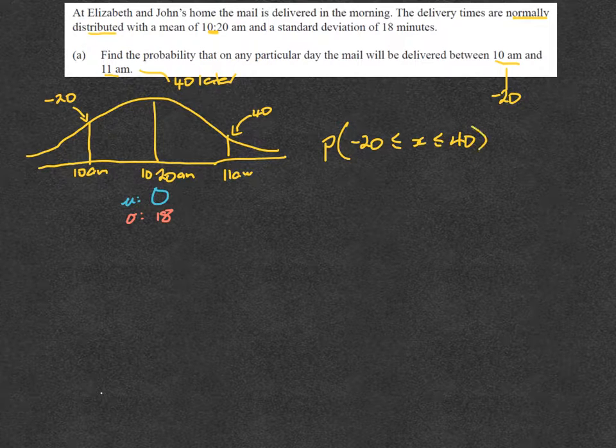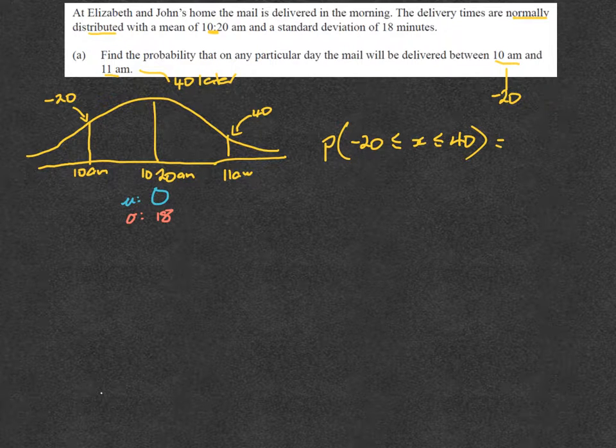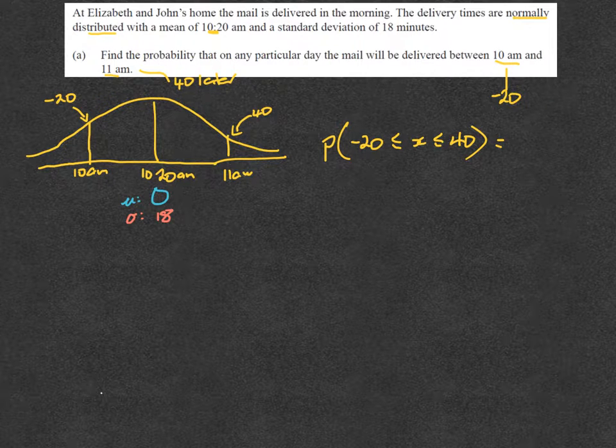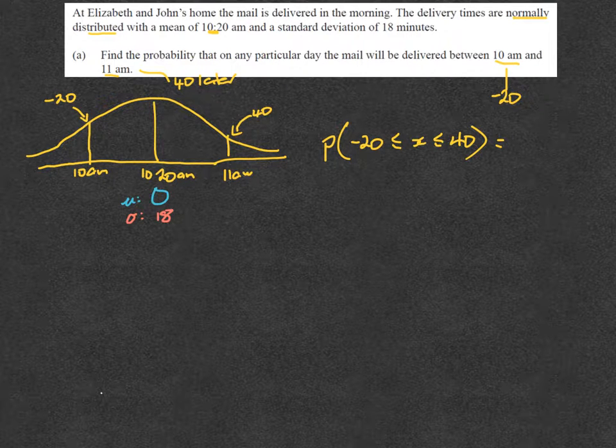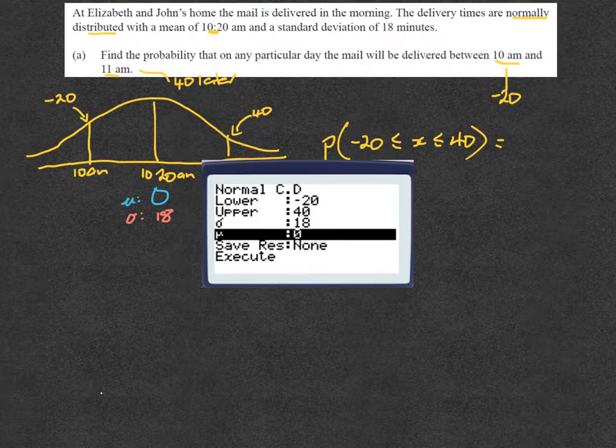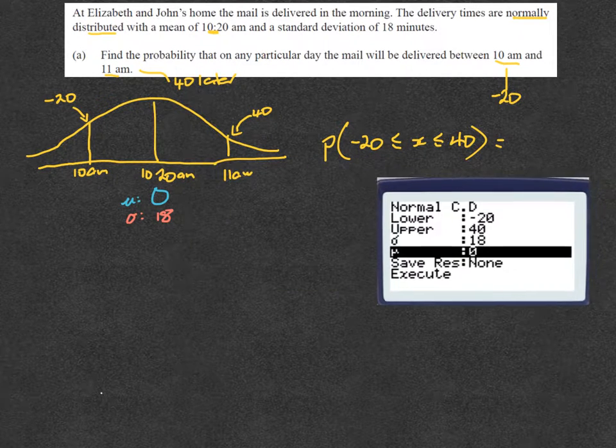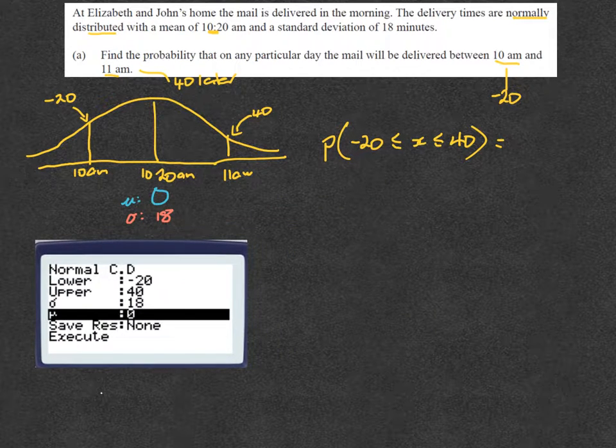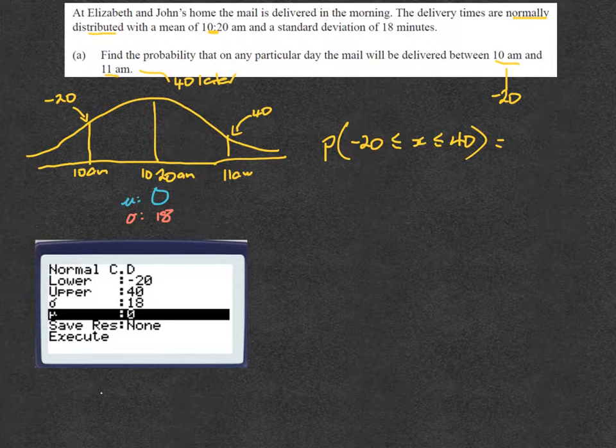So you get your calculator and you would bring it up, and your normal distribution screen would look a little bit like this. I'll put it down over here where I put minus 20 for the lower, the upper is 40, the standard deviation is 18, and the mean is 0 because I've made 10:20 equal to 0.